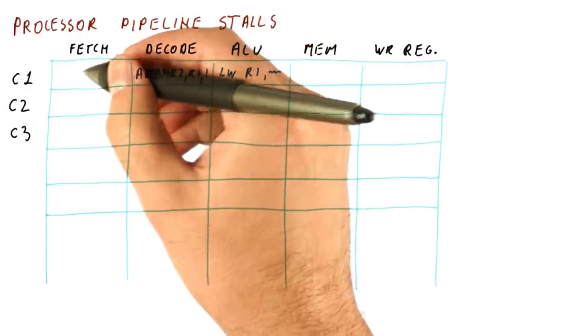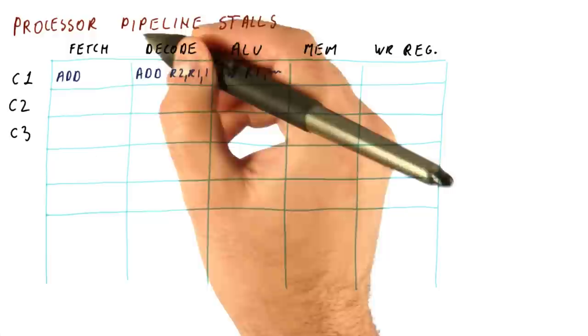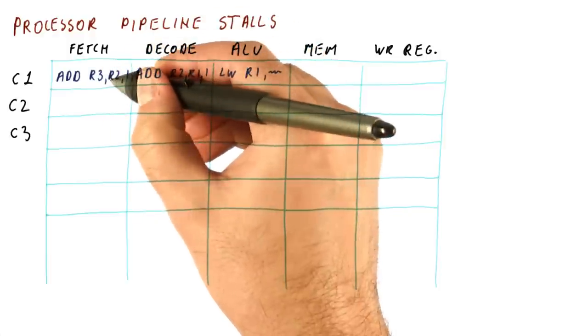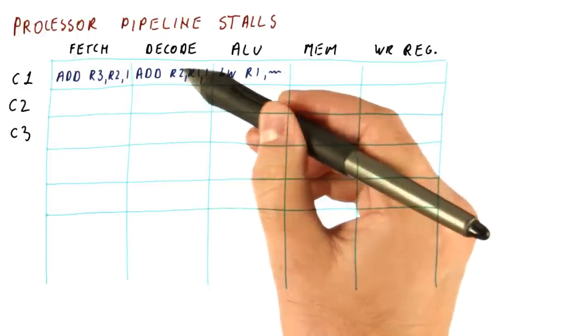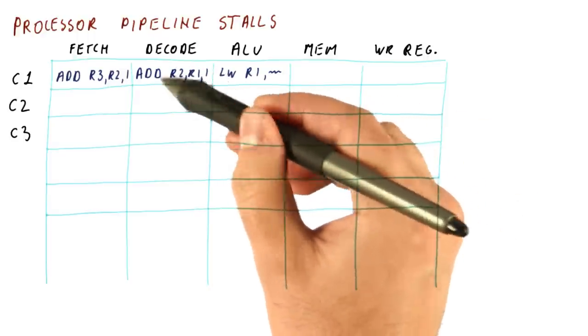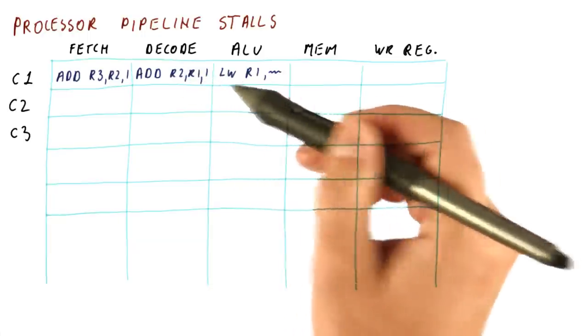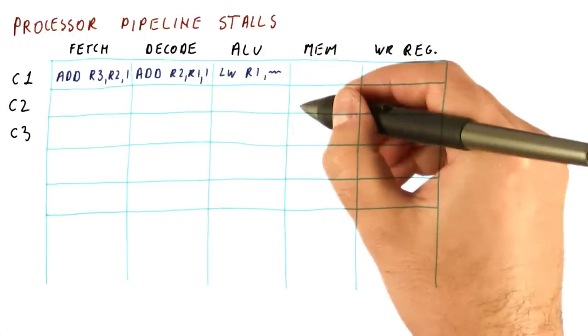And we have a subsequent instruction here. Let's say another add that adds R2 to R1 and produces R3. So now the problem is that this add here is reading the wrong value of the register.